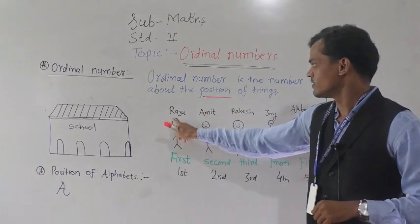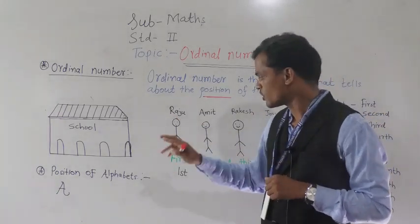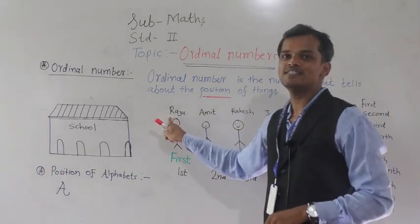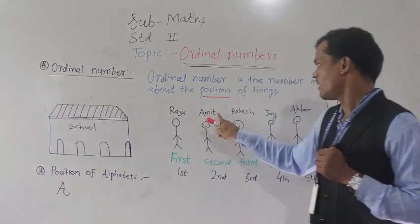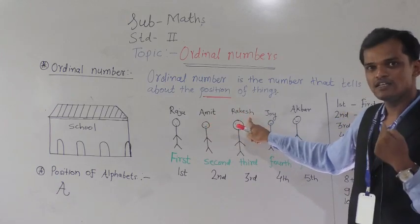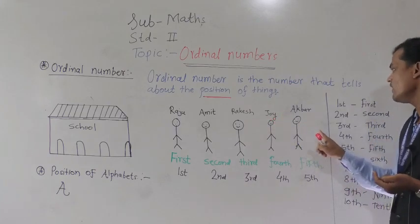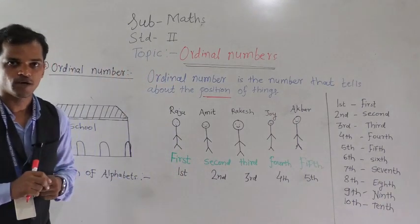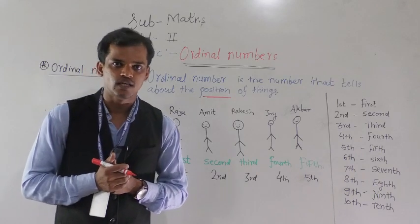So see here — Raju's position is one; he is standing in first position. We can tell in ordinal numbers: Raju is standing first, Amit is standing in second position, Rakesh's position is third, Joy is fourth, and Akbar is standing in fifth position. So ordinal numbers tell the position of things.